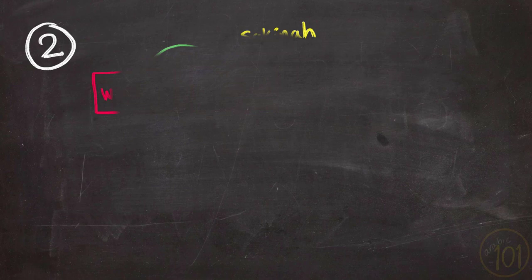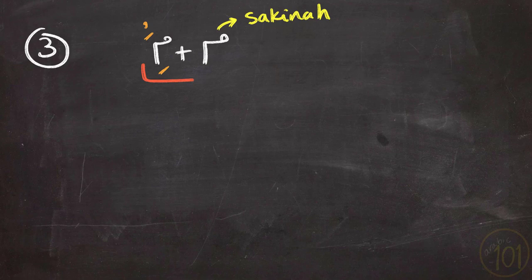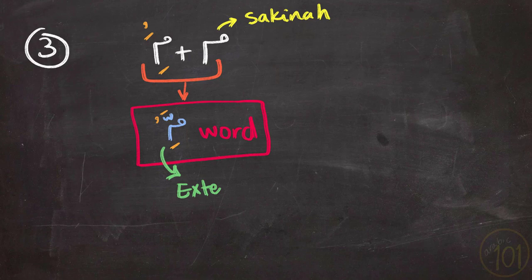Third, if Meem is added to itself, or in other words, it is a duplicated Meem with a Shadda on top. And when this happens, you'll always extend it for two Harakat as well, like in these examples.